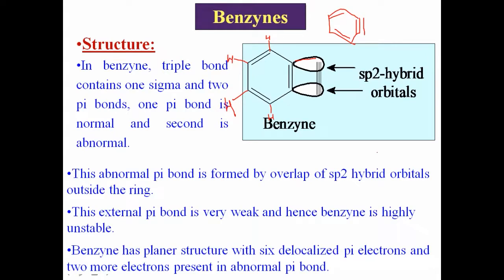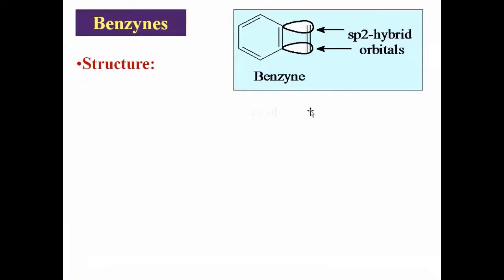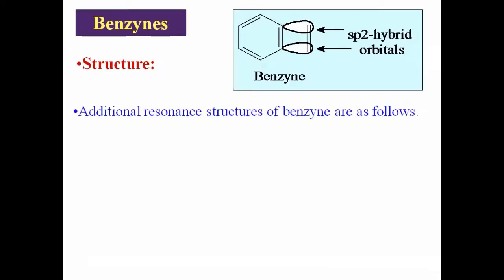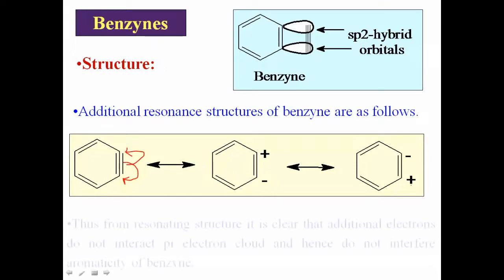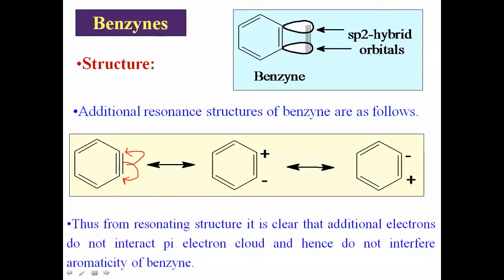There are six normal pi electrons and an additional two abnormal pi electrons. Those abnormal or extra pi electrons do not involve in the delocalization — they do not interact with the pi electron cloud and do not interfere with the aromaticity of benzyne. The resonating structures of benzyne show that if the pi bond breaks the electron pair, one carbon acquires negative charge and the other acquires positive charge, but those extra two electrons do not participate in delocalization. The benzyne intermediate is aromatic in nature.